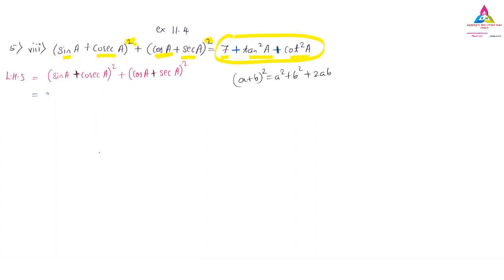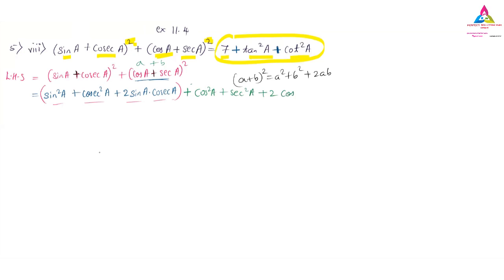Expanding the first bracket: sin²A + cosec²A + 2·sin A·cosec A. Then for the second bracket, similarly: cos²A + sec²A + 2·cos A·sec A. So I have written a², b², and 2ab for each bracket.